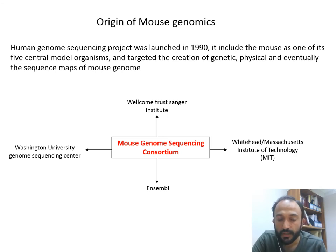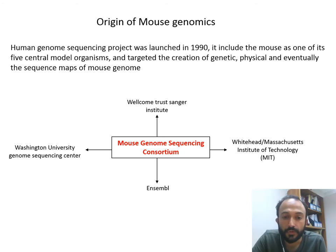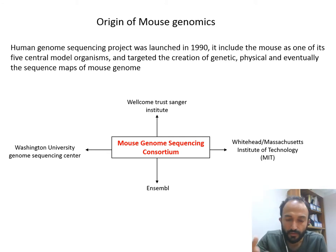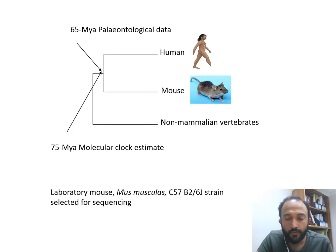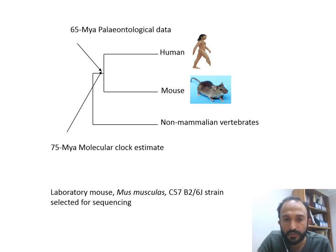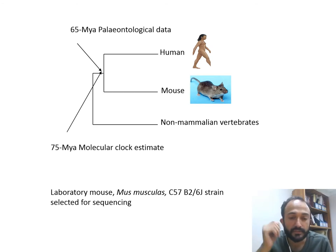That browser is the Ensembl Genome Browser. All four different organizations collaborated together and formed the Mouse Genome Sequencing Consortium. The reason for forming the Human-Mouse Genome Consortium is the high relationship between human and mouse — there was a gap of only 65 million years between human and mouse based on paleontological information, that is, the fossil records.